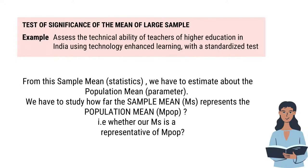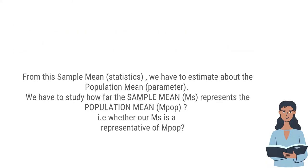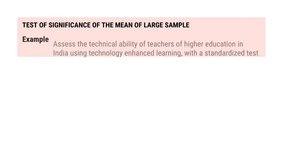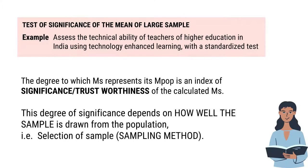From this statistic, we have to estimate the parameter — we have to estimate the population value. We have to study how far the sample mean represents the population mean. This is very important: whether our sample mean is a representative of the population. The degree to which the sample mean represents the population mean is the significance of the test of the population.